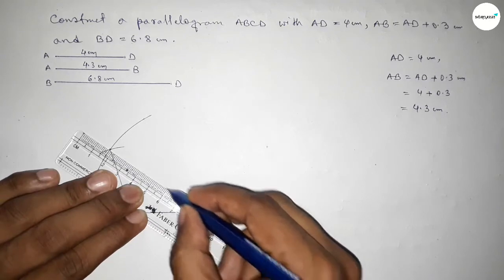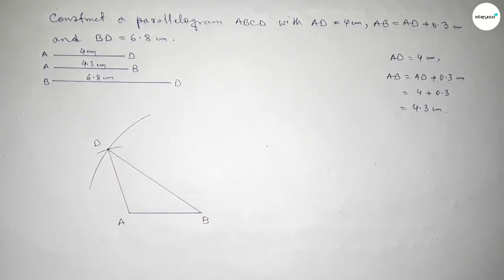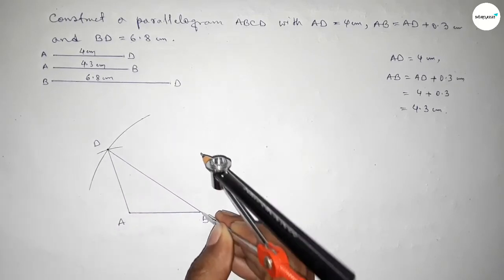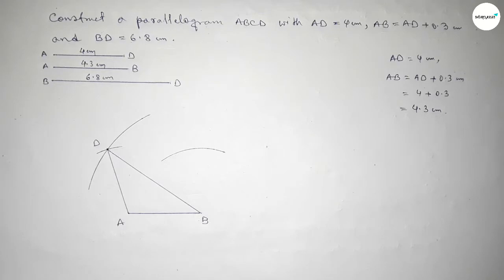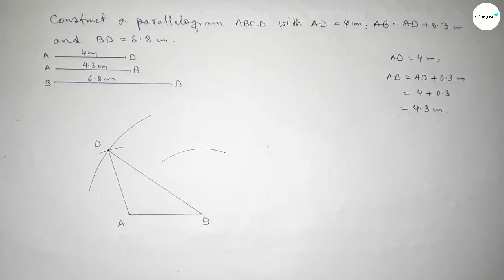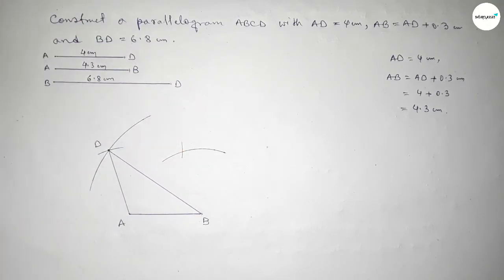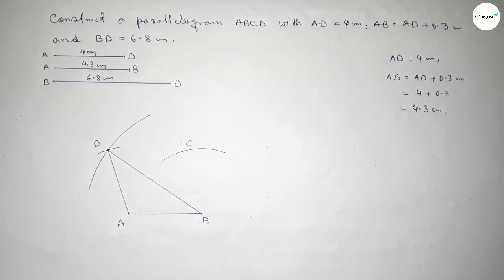Join the intersection point and mark it as point D. Now again take the length AD = 4 cm, place the compass on point D and draw an arc. Then take the length AB = 4.3 cm, place the compass on point B and cut an arc so both arcs intersect at a point.